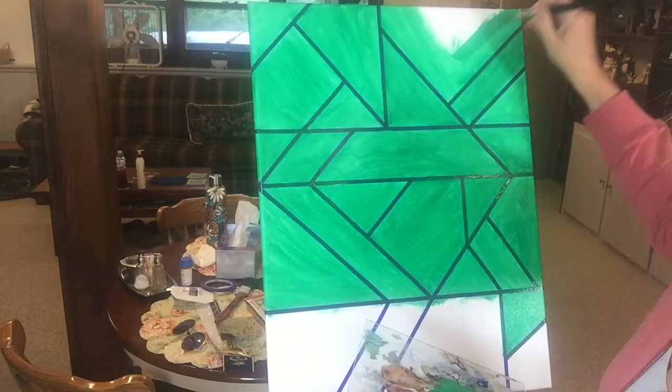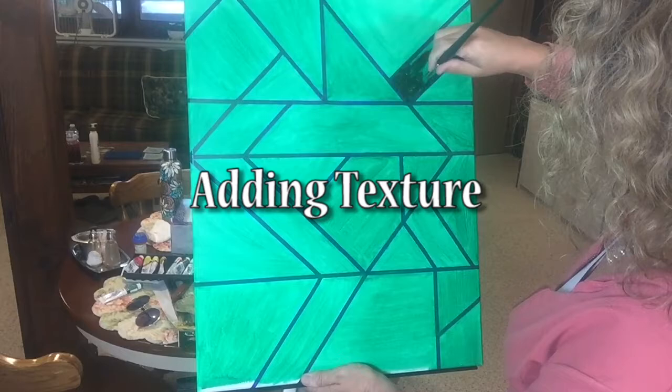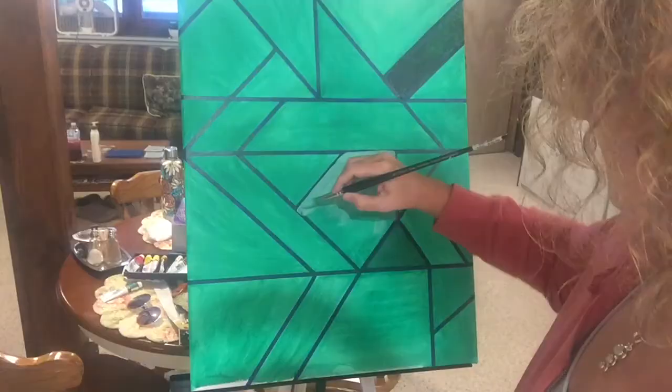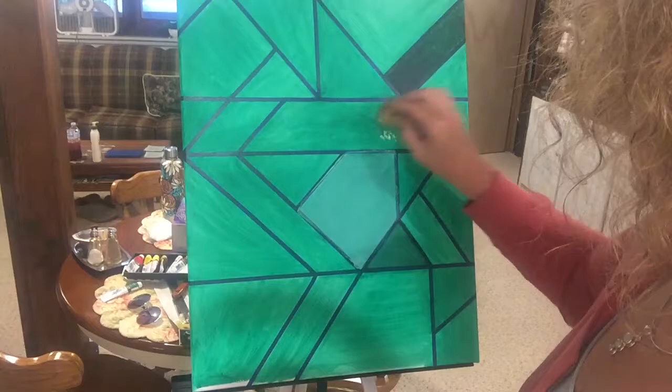And now begins the texturing part. Each tile I want to have a different shade of the emerald green and a different texture. And I might be doing several different things on the same tile to get the achieved look that I want.